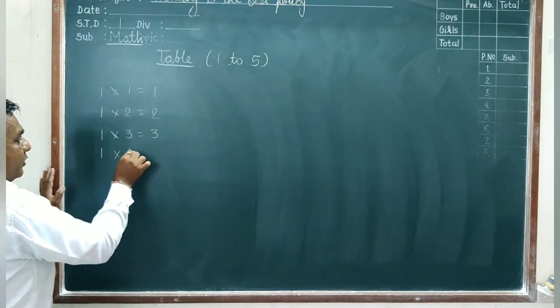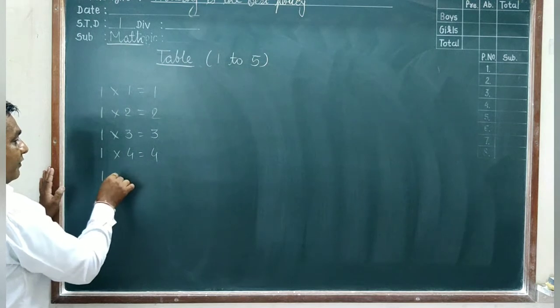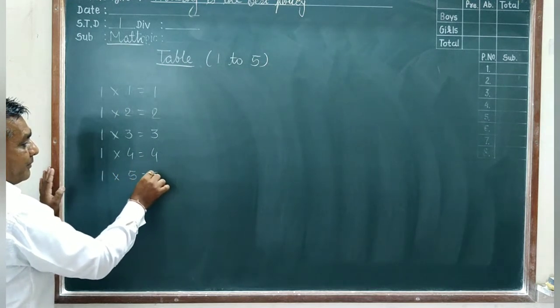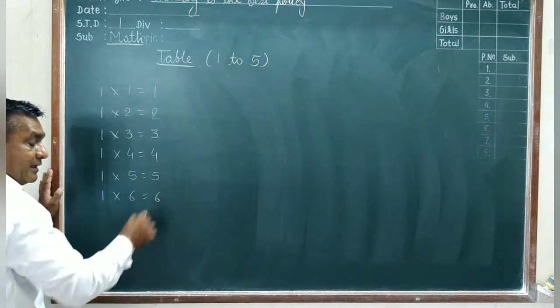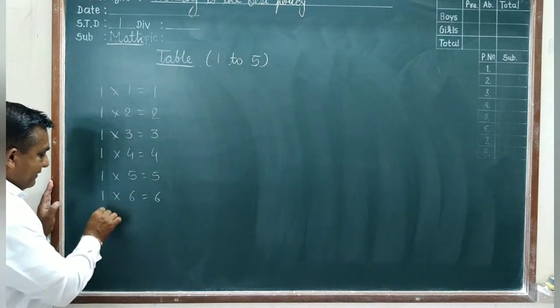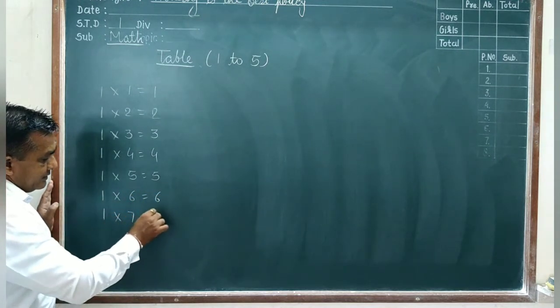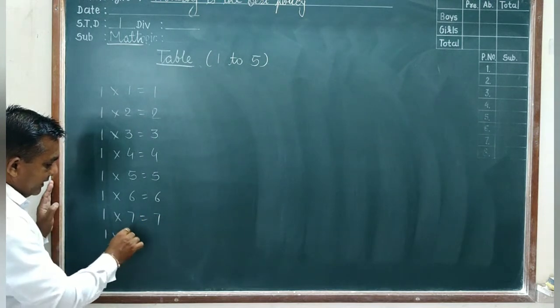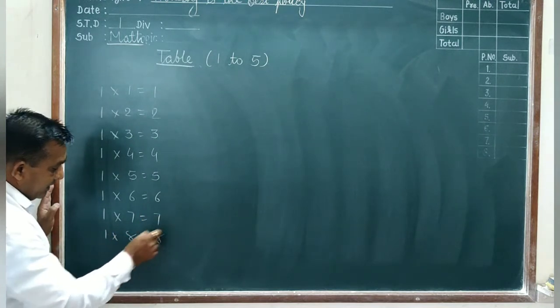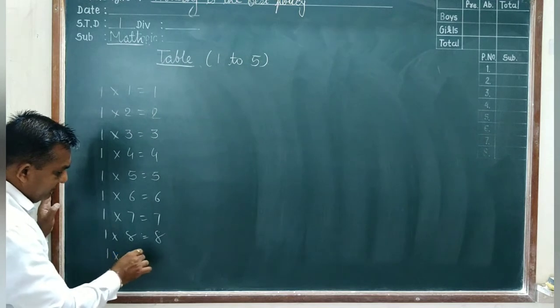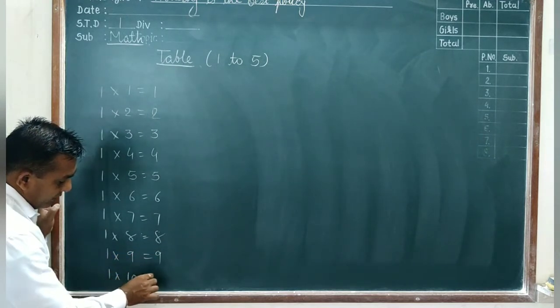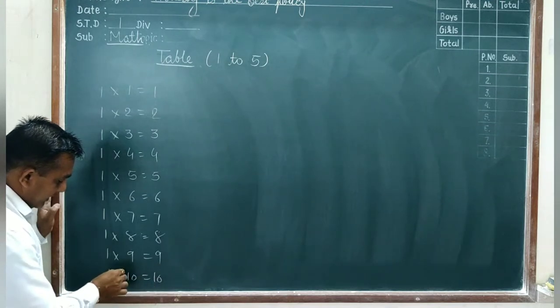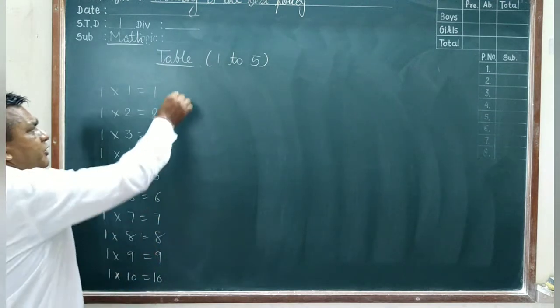1 four is 4, 1 five is 5, 1 six is 6, 1 seven is 7, 1 eight is 8, 1 nine is 9, and 1 ten is 10. Now table 2.